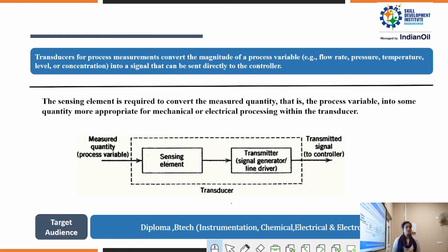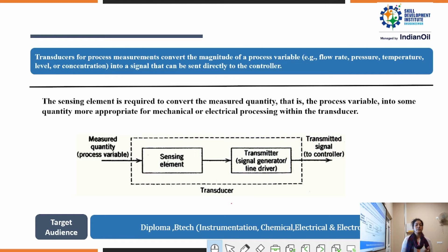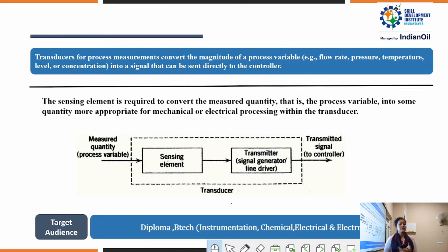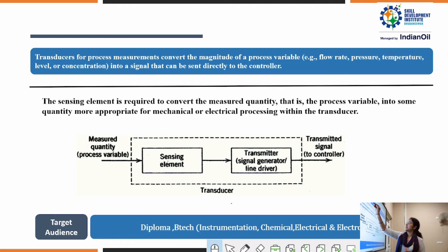Now, coming to the basics of instrumentation — this is the structure of the instrumentation system. The main component here is the transducer. The transducer for process measurement converts the magnitude of a process variable — for example, flow rate, pressure, temperature, level, or concentration — into a signal that can be sent directly to a controller.